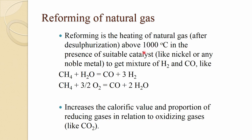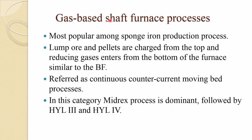Reforming is the heating of natural gas after desulfurization above 1000 degrees Celsius in the presence of a suitable catalyst — usually nickel or another noble metal — to get a mixture of hydrogen and CO. This ratio can be controlled using temperature, pressure, and catalyst. Reforming increases the calorific value and proportion of reducing gases relative to oxidizing gases like CO₂, and is an integral part of natural gas-based processes.